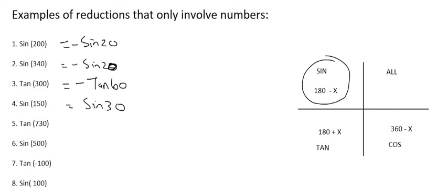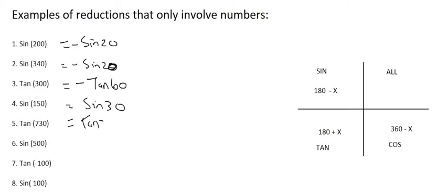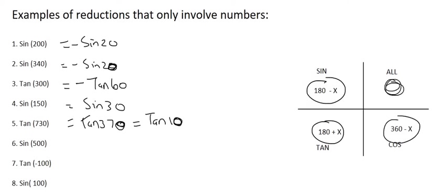Number 5 is the tan of 730. 730 is not on this diagram, so we subtract 360, which gives the tan of 370. That's still bigger than 360, so we subtract another 360, giving us the tan of 10. Now 10 degrees is already below 90 degrees — it falls into quadrant 1 and cannot be reduced any further. So tan 10 is the answer.